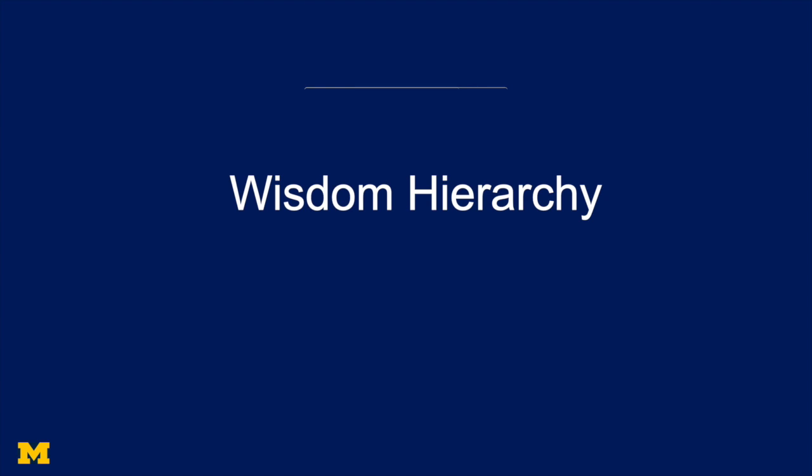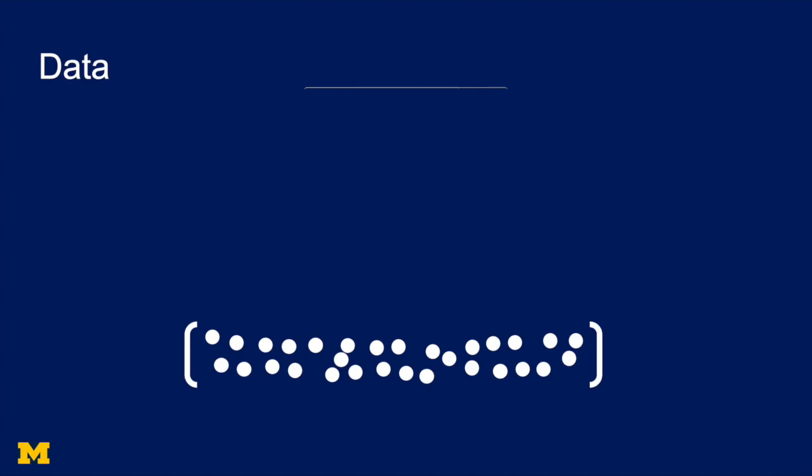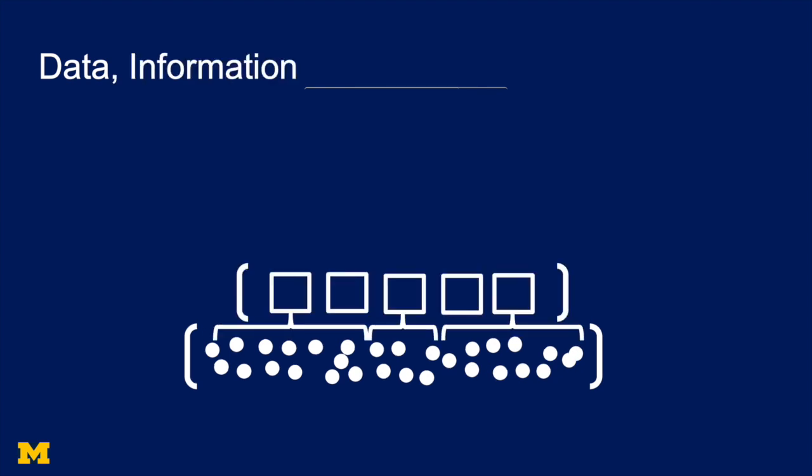To explain why the SIR model is so important, I want to first describe something called the Wisdom Hierarchy. So we have lots of data, particularly for something like COVID-19. There's more and more data pouring in every day. That data is only useful if we transform it into information. We put it into categories so we can read it in charts and draw inferences.